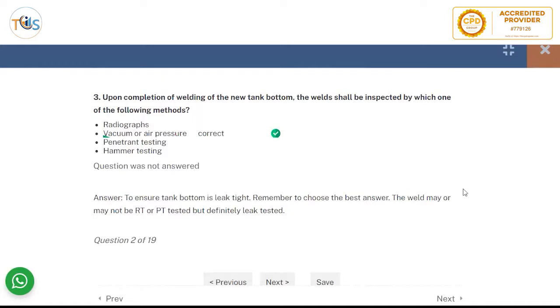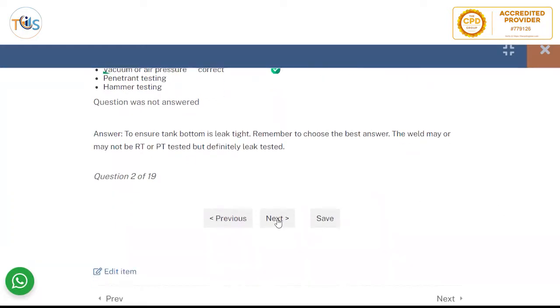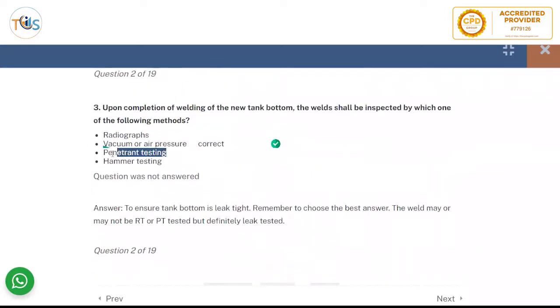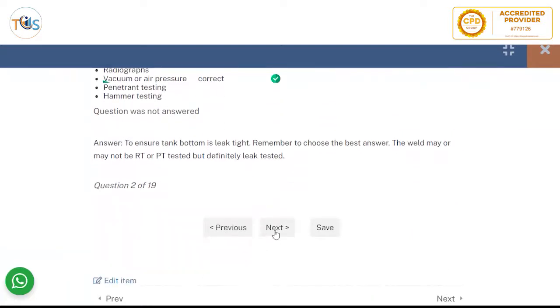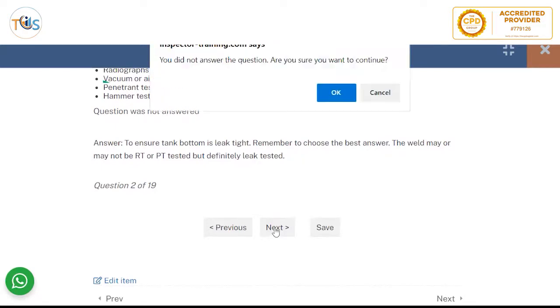Next question. For completion of welding of the new tank bottom, the weld shall be inspected by which of the following methods. Now you might want to do radiography or penetrant test. But it's not, unless it's specified, it's not a must. But you surely need to do a vacuum test to see that the weld that has been done is leak tight. So always answer the best. Choose the best answer. That's what API wants from you. So the other thing might be right in case it's required. Penetrant test and radiograph. Hammer test we don't do on the tank bottom after the repair. But the vacuum or air pressure test is a must.